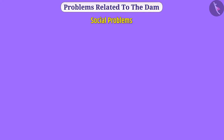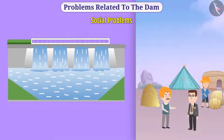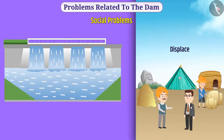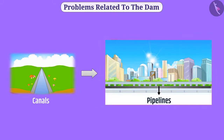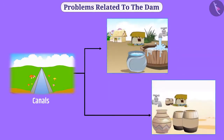There are some problems related to dams. Social problems: for building dams, a large number of farmers and tribals are displaced, and promises made while displacing them are not fulfilled. With the help of canals, there is a system of transporting water to far locations, but there is no uniform distribution of water. Those near the dam use an excessive amount of water, while people located far away are deprived of water.